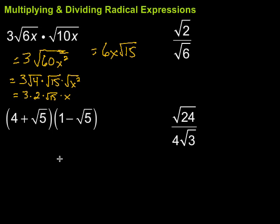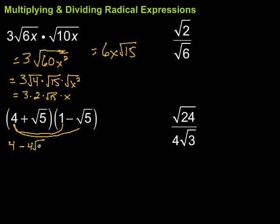Let's take a look at this next one. The rules for multiplying binomials follow whether it's a regular number or a radical — we can still use the FOIL method. So let's FOIL these two binomials and then simplify. The first terms: 4 times 1 is just 4. Then 4 times minus square root of 5 is minus 4 square root of 5.